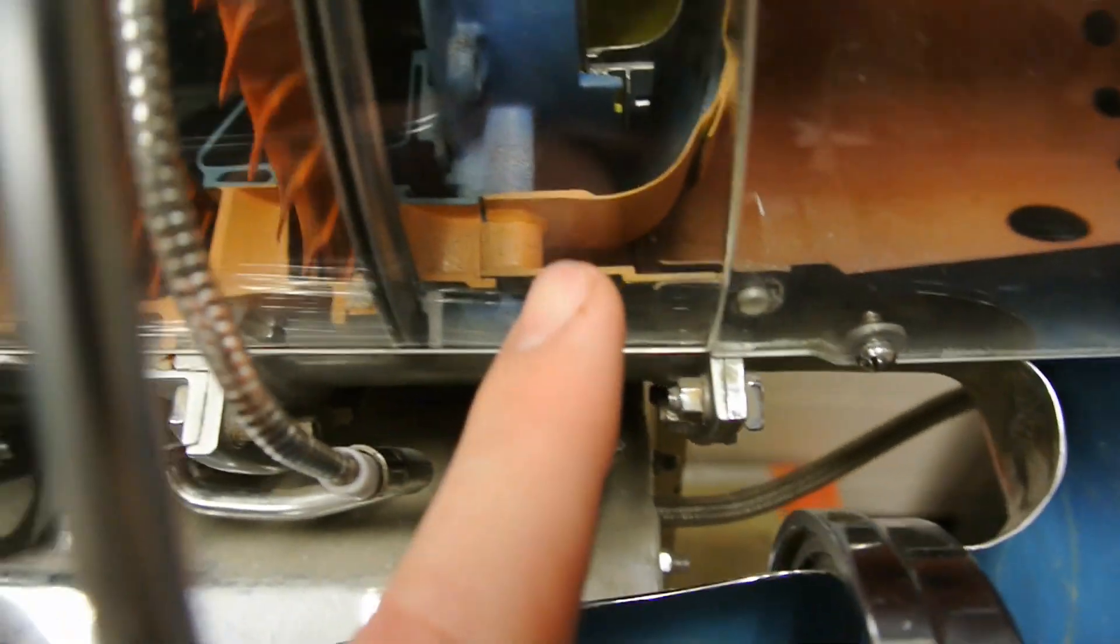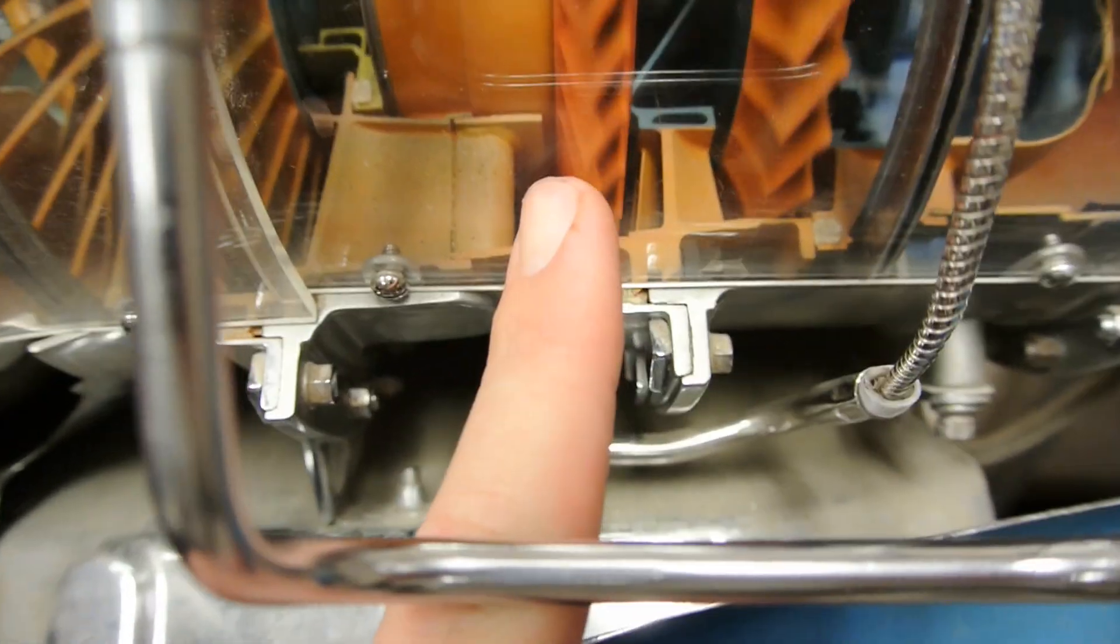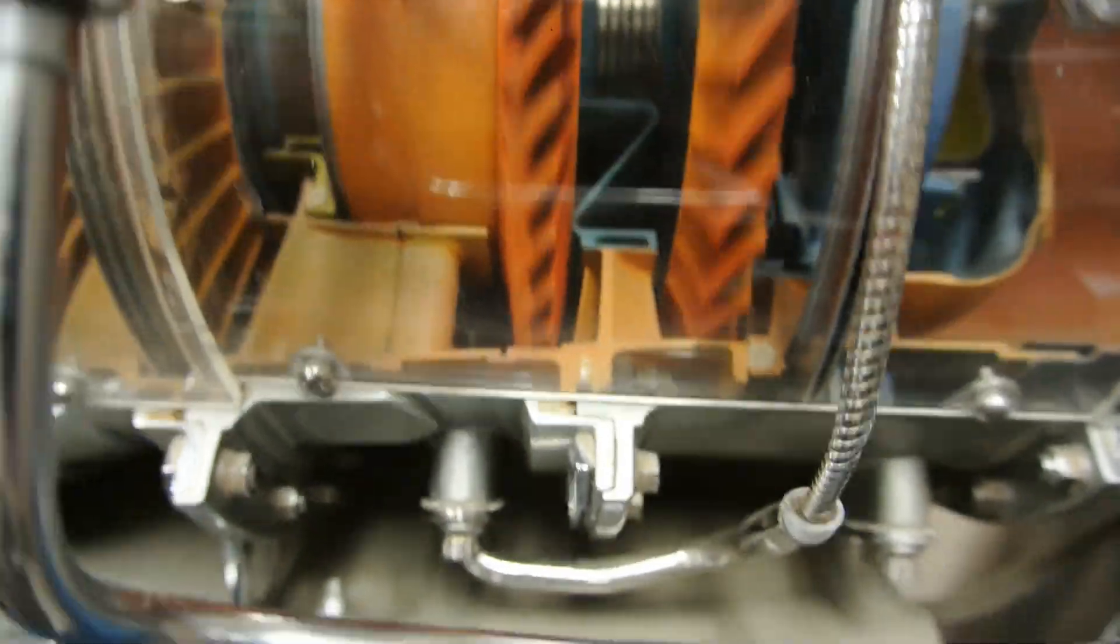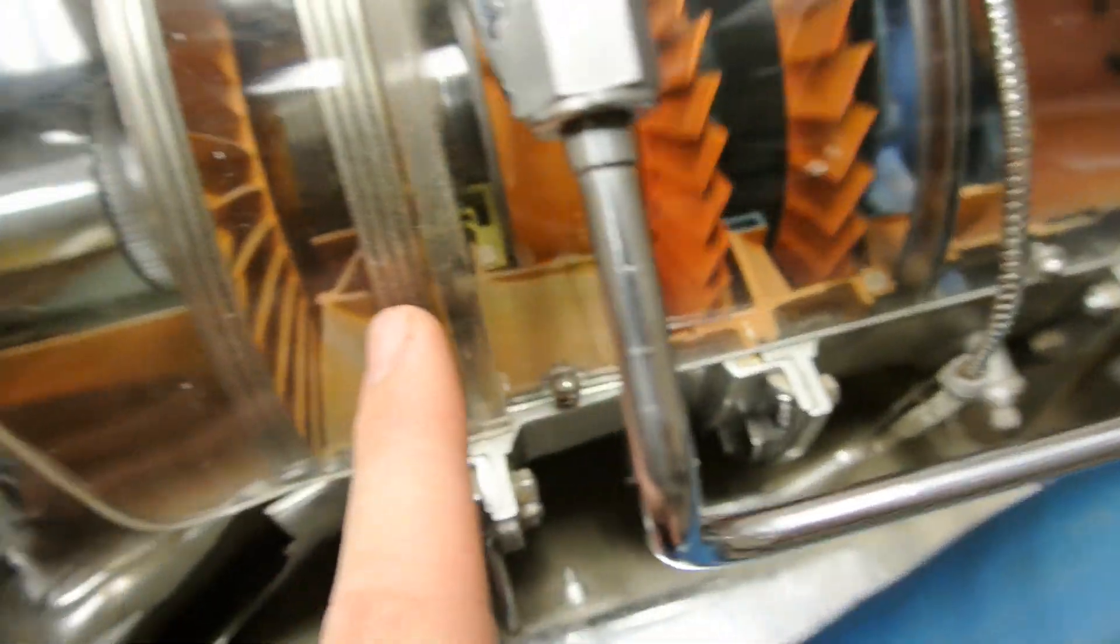And that gas comes in and travels in this very small channel. That's the only place it strikes the turbine, and that's a 360 degree circle all the way around there. And once it comes through, it spins that one.